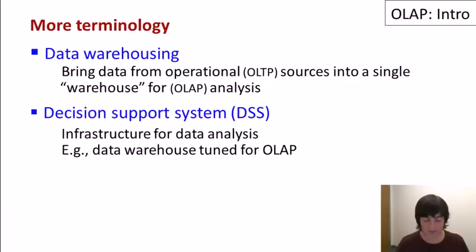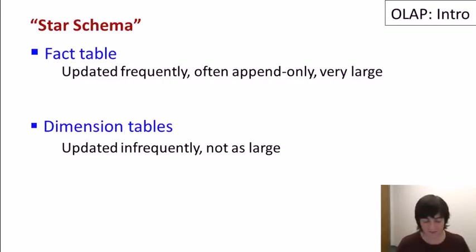Another term you might encounter is decision support systems, also known as DSS. This isn't really an exact term. It's generally used to talk about infrastructure for large scale data analyses. So if you think of a data warehouse, where we're bringing in a lot of data from operational sources, and that warehouse is tuned for OLAP queries, that would be thought of as a decision support system. And of course, this system is designed to support decisions that are made based on data analysis.